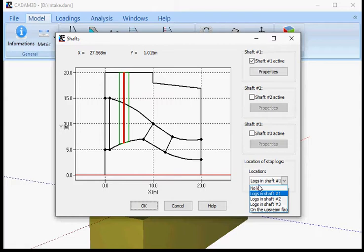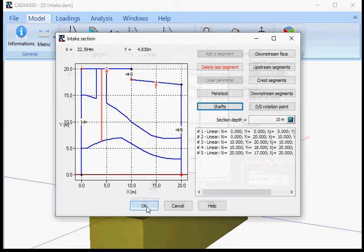If you don't want to, you would have no log. You just select here. Or if you want to put your logs into any of the shafts, you select them here or on the upstream face, because one of the load cases here is using dry section. It means you have to set where your logs are going to be located when you're going to dry your penstock.